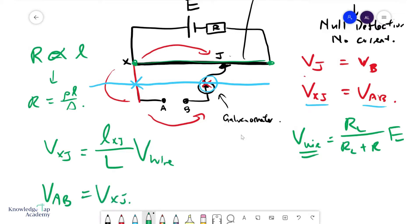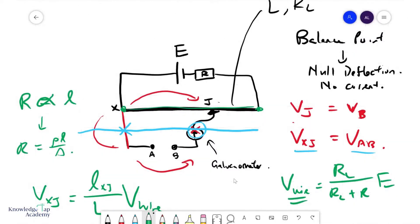And so this is essentially how we use a potential meter to measure potential differences like the one here across ab.